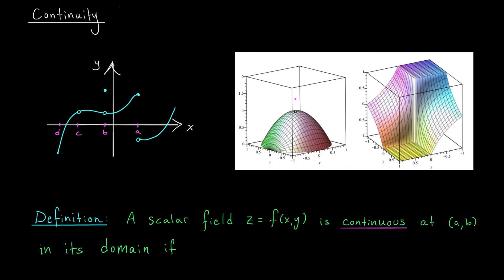At c, we have a similar problem. The function approaches the same values from the left and from the right, but the function isn't actually defined at x equals c. So again, we'll say the function is discontinuous there. At d, however, the situation looks a little bit better. The function is defined at that point and agrees with the left and right-hand limits. So the limit exists and it's equal to the value of the function — we'll say that f is continuous at that point.